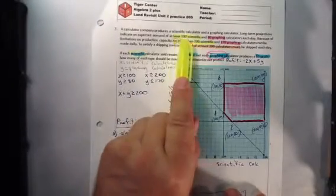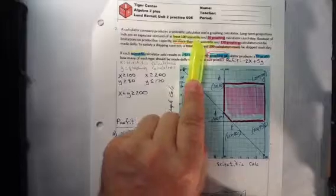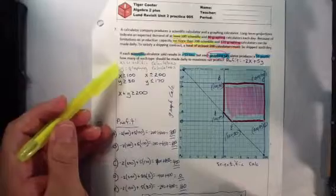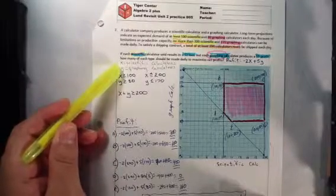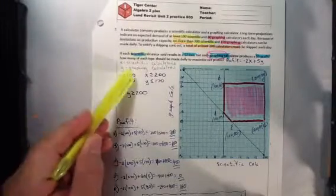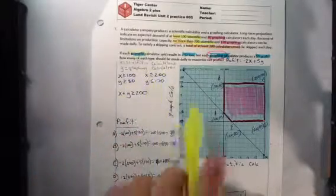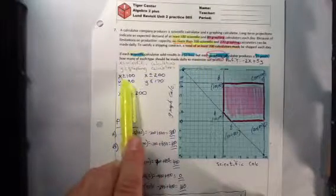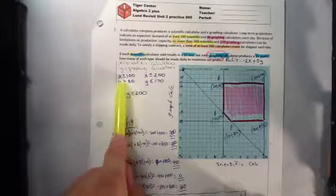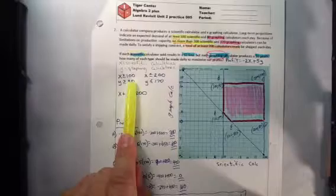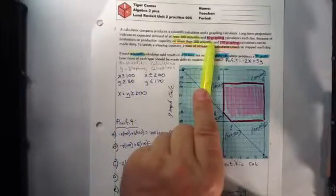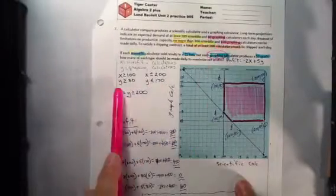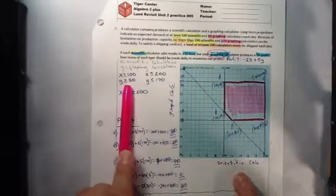We're talking about at least 100 scientific and 80 graphing calculators. The first thing we want to do is make sure that we write our variables. X will represent the scientific calculators, Y the graphing calculators. At least 100 scientific - at least is a greater than or equal to sign. So X greater than or equal to 100. At least 80 graphing calculators, so Y greater than or equal to 80.